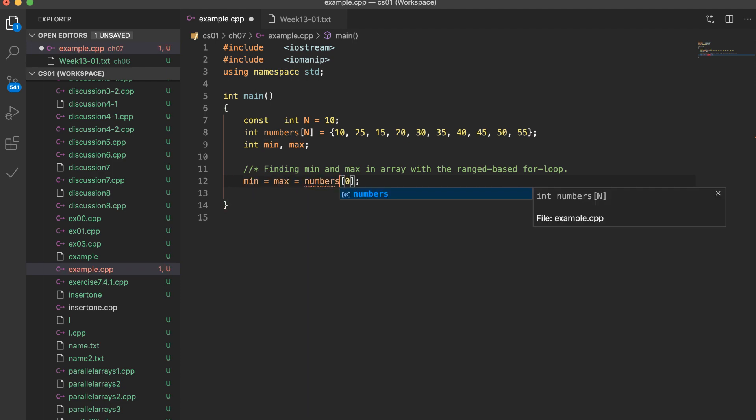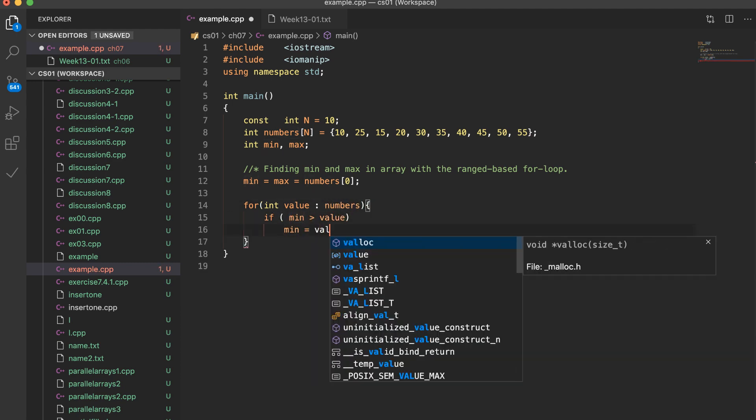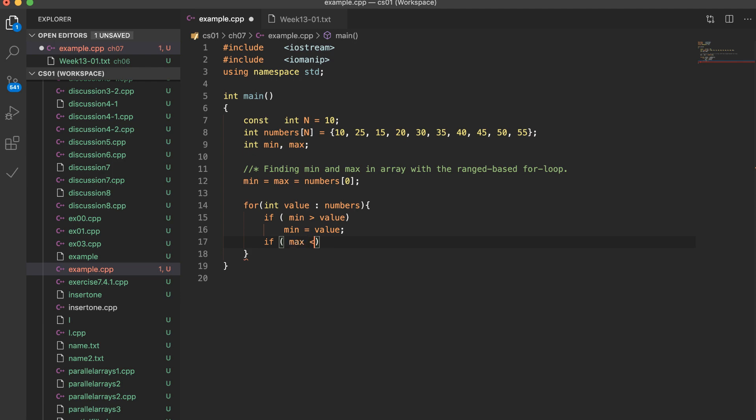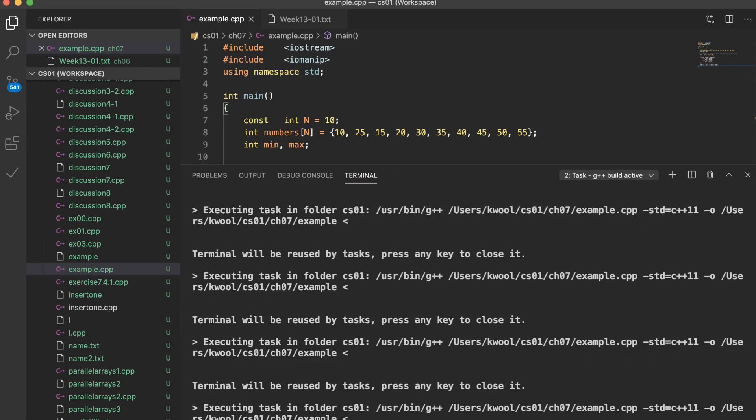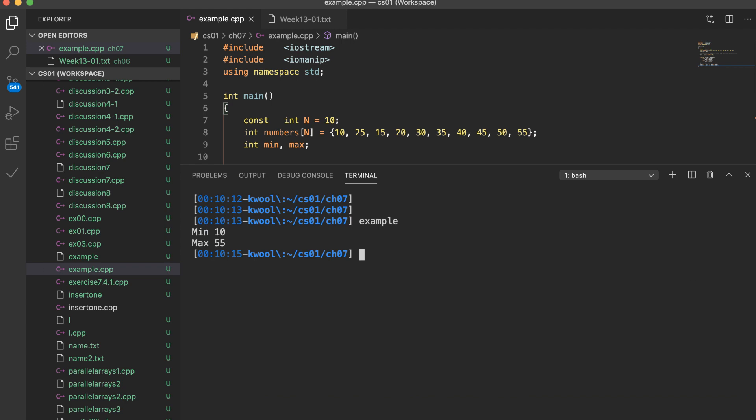Inside the loop, if we find the last value than current minimum, we need to reassign the min value as the current value. And similarly, if we find great value than current max value, we will assign the current value to the max variable. And let's compile run this program and here is the result of this program.